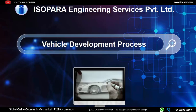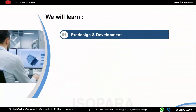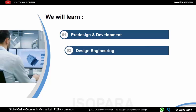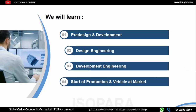This video is about the vehicle development process. We will be talking about all the stages and steps involved in developing a vehicle, or as a design engineer, what are the steps one should follow while developing a vehicle. These stages are divided into four: pre-design and development, design engineering, development engineering, and the final stage — start of production and the vehicle at market.